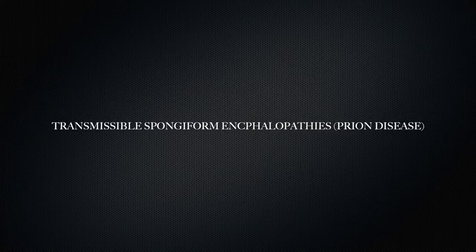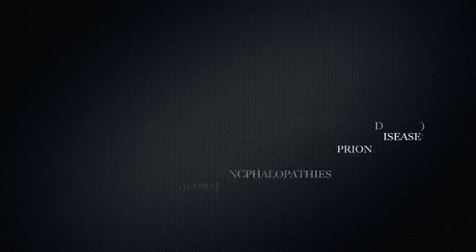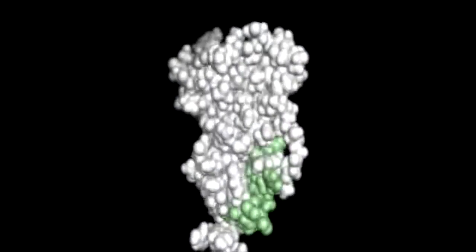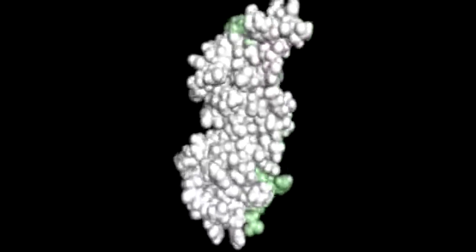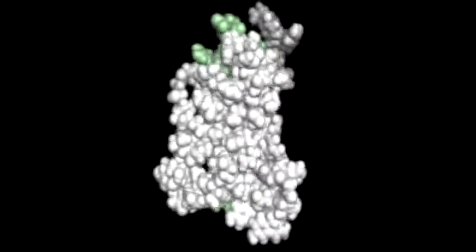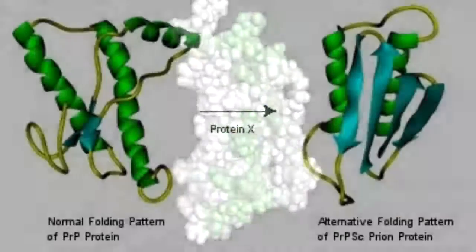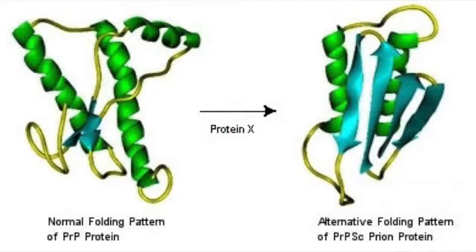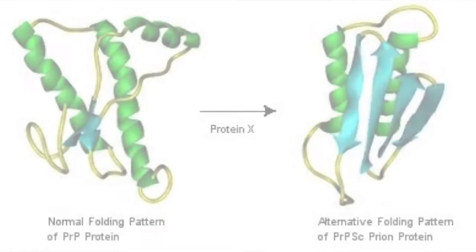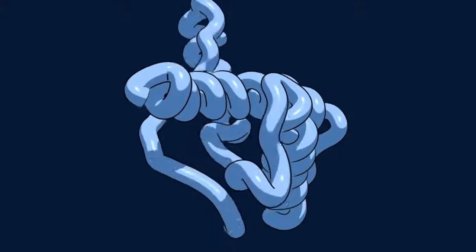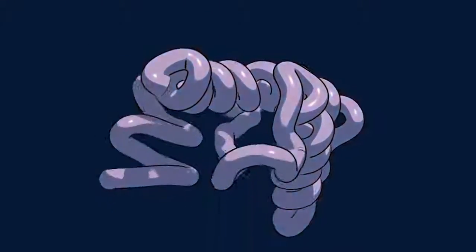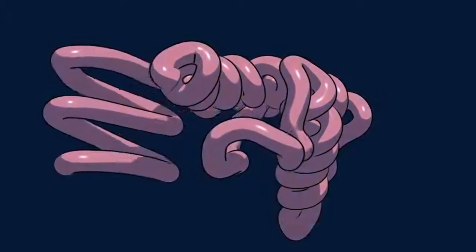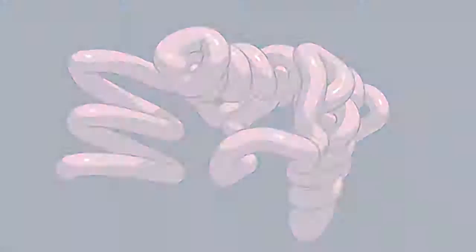They are classified as TSEs, or prion disease. This is a normal PRP protein. They are found all over the human body, even in healthy individuals. The enzymes in our body can break down this protein. But if it misfolds, it creates an infectious prion and our body's enzymes cannot break them down.